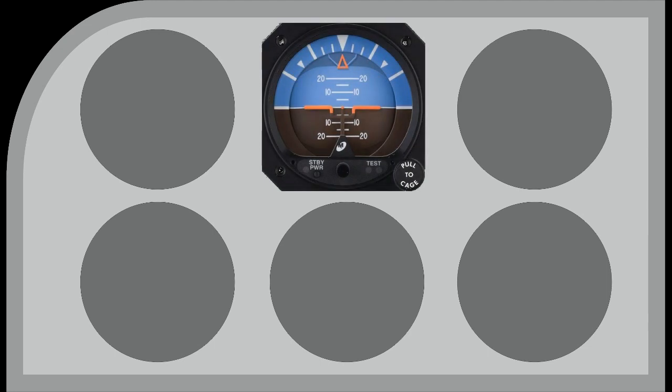By far the most important instrument is the artificial horizon, often known as the attitude indicator. This instrument is described in other videos, but it is the most important instrument because it tells the pilot which way up the aircraft is — an important piece of information, as flying in bad weather can be disorientating.